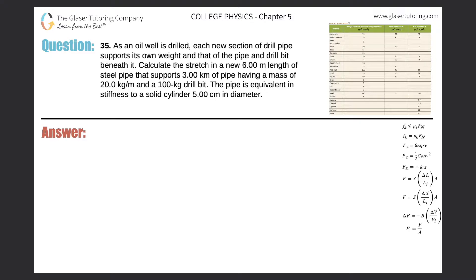Number 35. As an oil well is drilled, each new section of drill pipe supports its own weight and that of the pipe and drill bit beneath it. Calculate the stretch in a new 6 meter length of steel pipe that supports 3 kilometers of pipe having a mass of 20 kilograms per meter and a 100 kilogram drill bit. The pipe is equivalent in stiffness to a solid cylinder 5 centimeters in diameter.